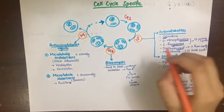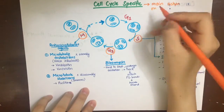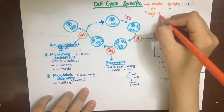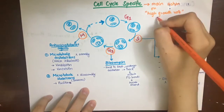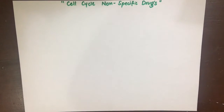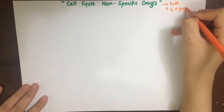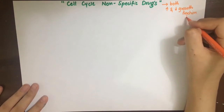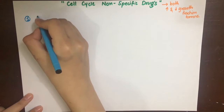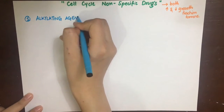Cell cycle specific drugs are mainly active against tumors with an increased growth fraction, such as blood cell tumors like leukemias. Non-specific cell cycle anti-cancer drugs can act on both high and low growth fraction tumors. The non-cell cycle specific anti-cancer drugs include alkylating agents and anti-tumor antibiotics.